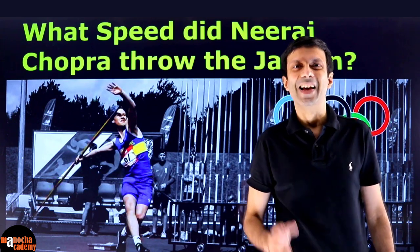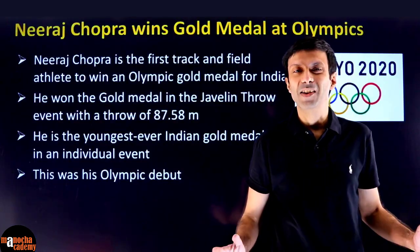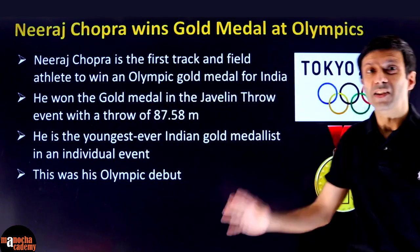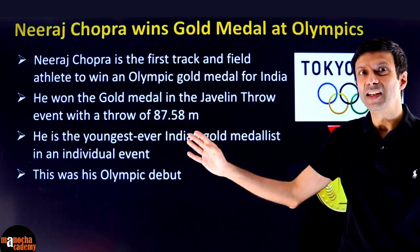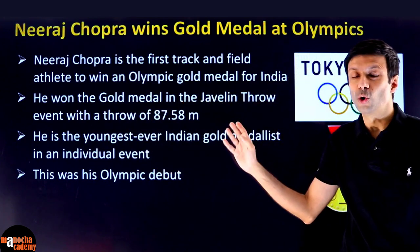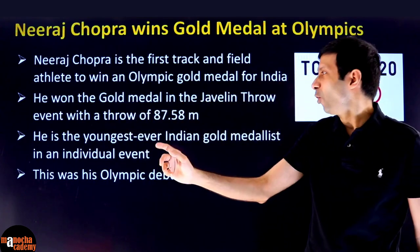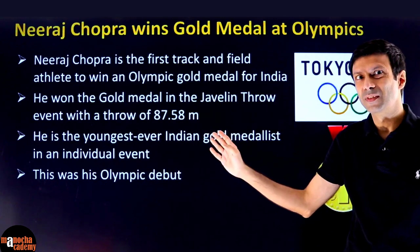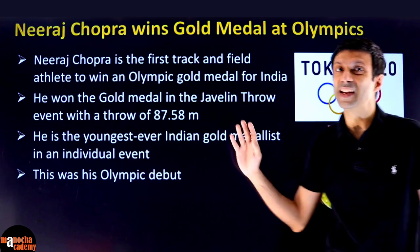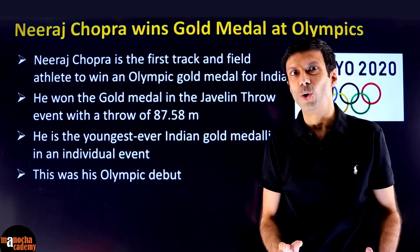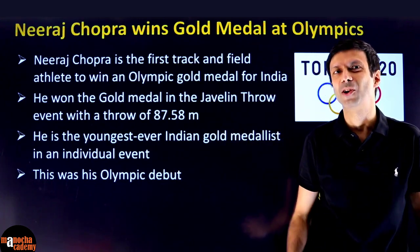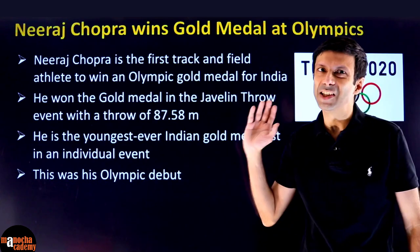Alright guys, are you ready? Let's get started. Before we begin, let's look at some interesting facts about Neeraj Chopra winning this gold medal. Neeraj Chopra is the first track and field athlete to win an Olympic gold medal for India. He won the gold medal in the javelin throw with an amazing throw of 87.58 meters. At the age of 23, he's the youngest ever Indian gold medalist in an individual event. And this was his Olympic debut — his first Olympics — and he won the gold medal. It's a really inspirational story.